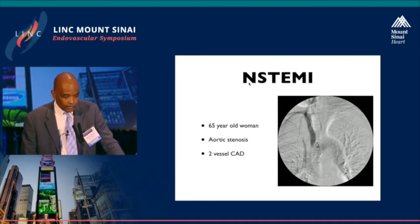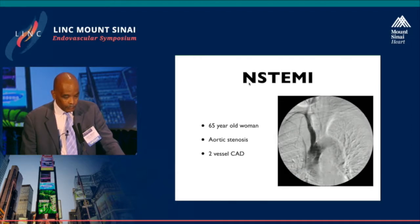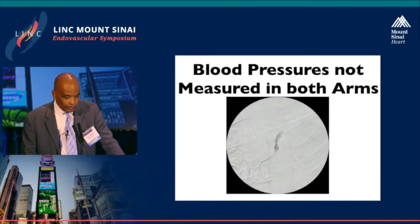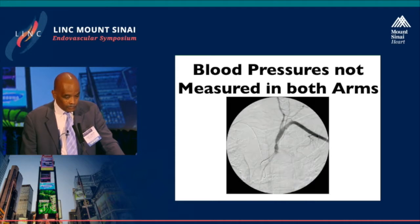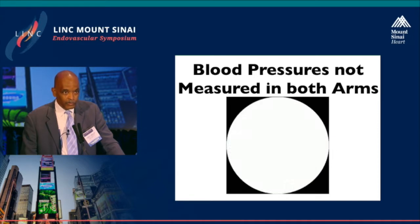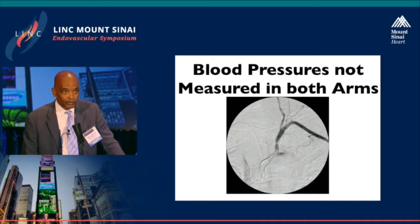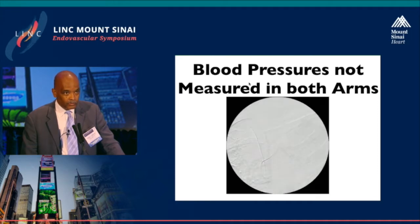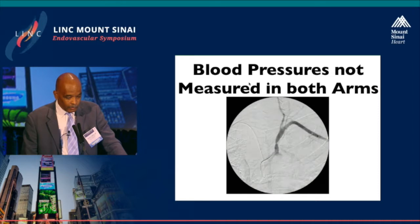This was a patient that had a non-STEMI, was being evaluated for aortic stenosis, and was found to have two-vessel coronary artery disease. What doesn't show up very clearly on the initial aortogram is a tight subclavian stenosis. This patient did not have blood pressures measured in both arms when they went to the laboratory. In labs doing primarily radial cases, it's paramount that you do this — otherwise you'll end up with a patient like this.